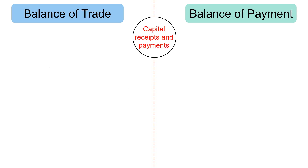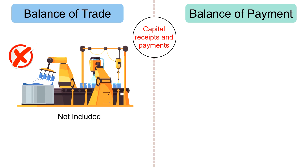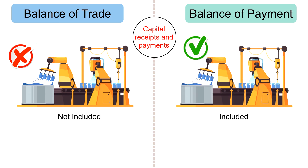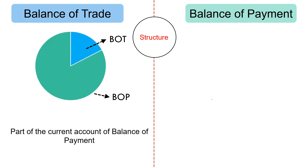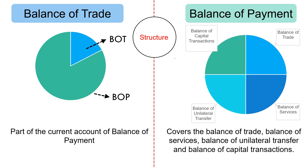Regarding capital receipts and payments: balance of trade does not include capital receipts and payments. In contrast, balance of payment includes capital receipts and payments. In terms of structure, balance of trade is a part of the current account of balance of payment. Conversely, balance of payment covers the balance of trade, balance of services, balance of unilateral transfer and balance of capital transactions. In short, the balance of trade is a subset of the broader balance of payment.